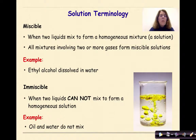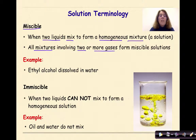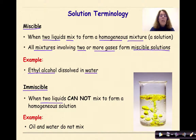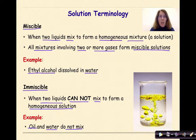Miscible means two liquids can mix to form a homogeneous mixture in solution. All mixtures involving two or more gases are miscible. An example is ethyl alcohol dissolved in water. Immiscible is when two liquids cannot mix to form a homogeneous solution — as seen in the image of oil and water, which do not mix and are therefore immiscible.